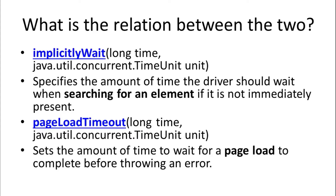Implicit wait specifies the amount of time the driver should wait when searching for an element if it is not immediately present. So you might have heard about polling — we keep polling the document object model unless we find our element, but we've got some limit. The amount of time that we define, it's going to poll the DOM till that much amount of time.